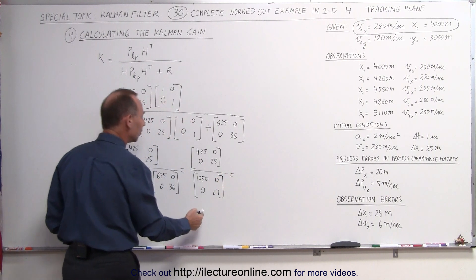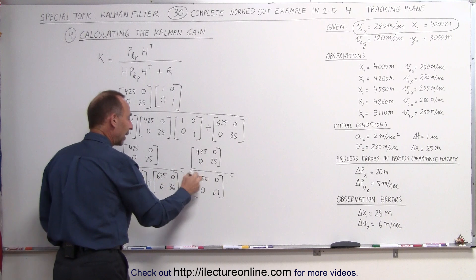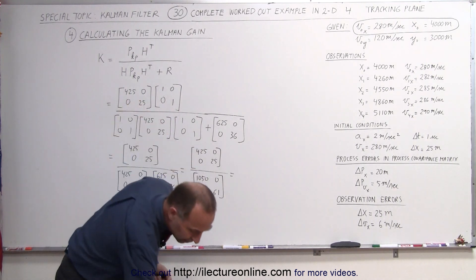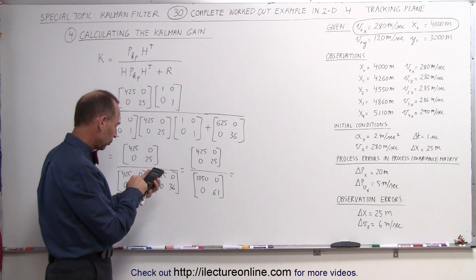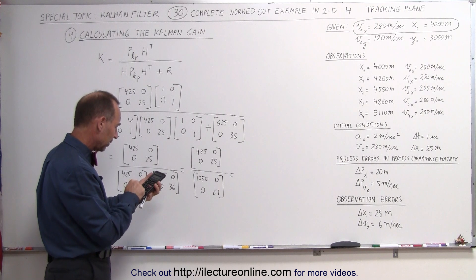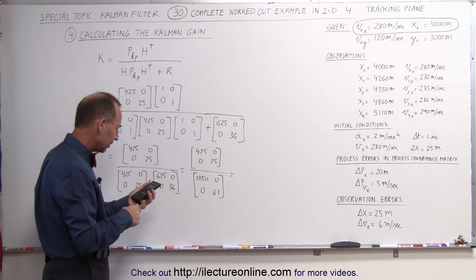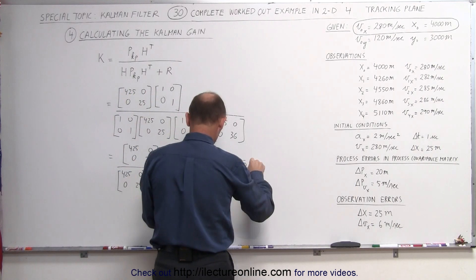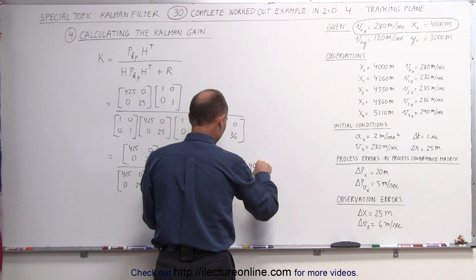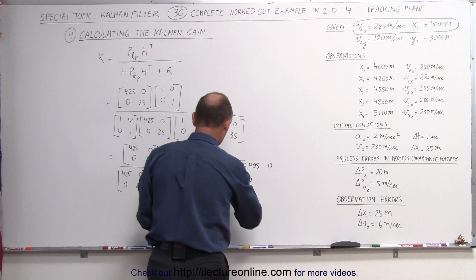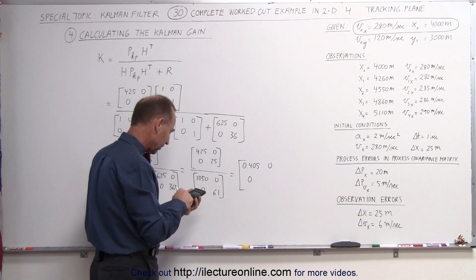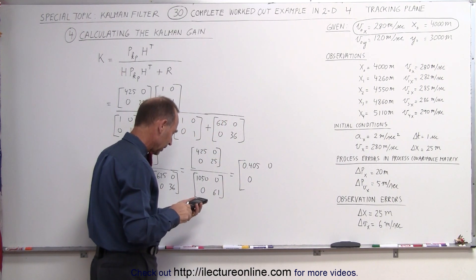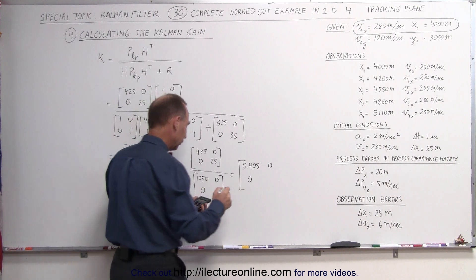And now all we have to do is divide the numerator by the denominator. For that we need a calculator. So 425 divided by 1050, we get 0.405. 0, 0, 0, 0. And here we have 25 divided by 61, we get 0.410.